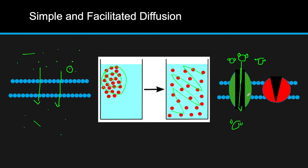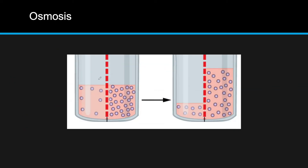With a carrier protein, say a molecule comes — the protein will change shape without the need of any energy and the molecule will be able to pass through. That's pretty much everything for simple and facilitated diffusion.